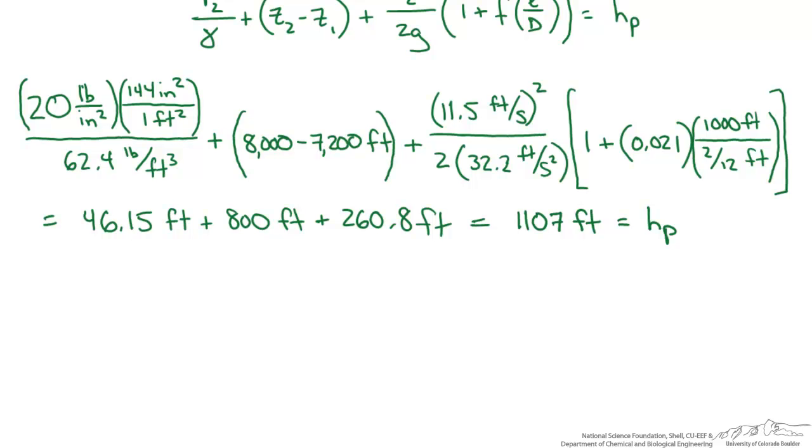However, we've only calculated the major losses in the system and totally neglected the minor losses. Now is that appropriate? Let's take a quick look at the minor losses and see how they stack up. Minor losses are the summation of all losses due to components. We're going to use a loss coefficient multiplied by a kinetic component.